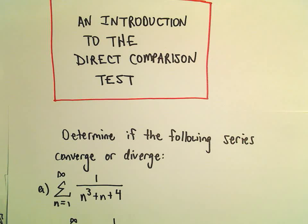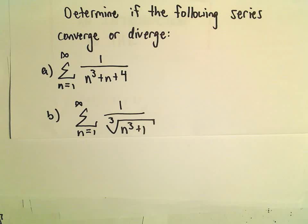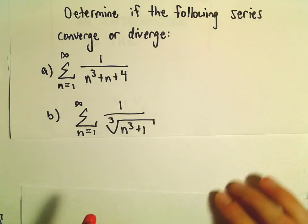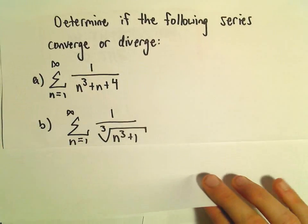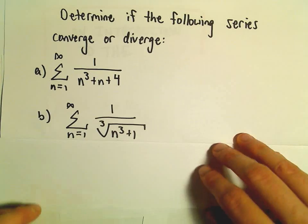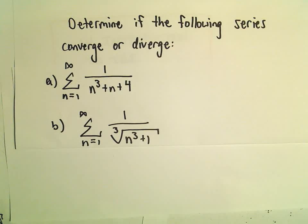Okay, here we're going to look at a couple examples related to the direct comparison test. In part A here, we're going to figure out whether the series 1 over n cubed plus n plus 4 converges or diverges. We'll compare it to a series that we know converges or diverges.